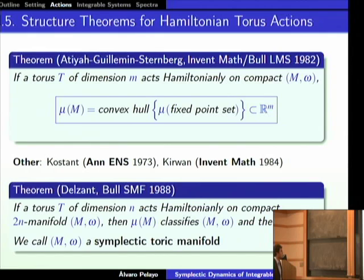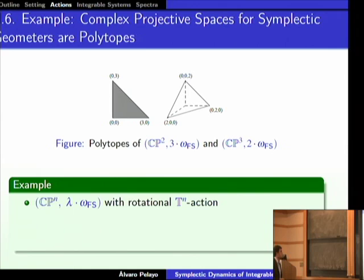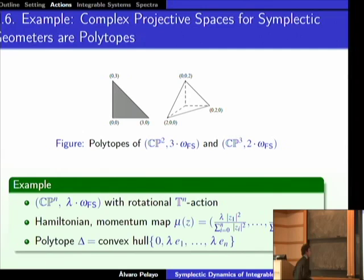A few years later, Delzant proved that in the particular case that the torus is precisely half the dimension of the manifold, this polytope contains all the information about the manifold, the symplectic form, and the torus action. These manifolds, classified by a polytope, are called symplectic toric manifolds. For example, consider CP^n with the rotational T^n action: the polytope is the convex hull of the origin and λ times the canonical basis vectors in R^m. So from the point of view of symplectic geometry, Delzant's theorem tells you all the information on CP^n is contained in a polytope — the situation is quite rigid.